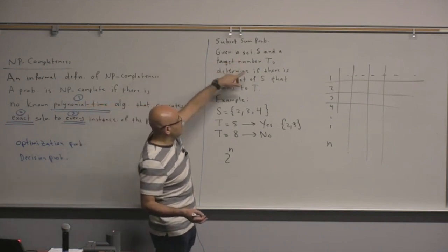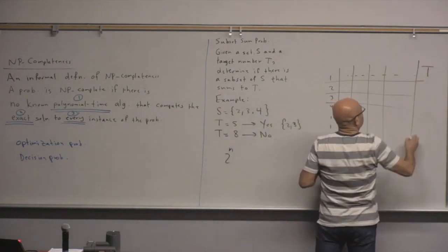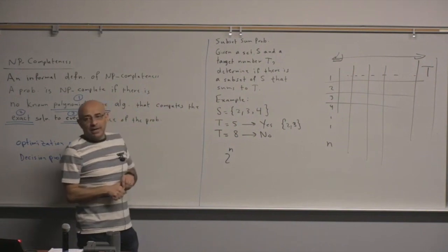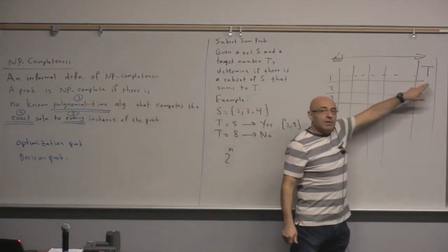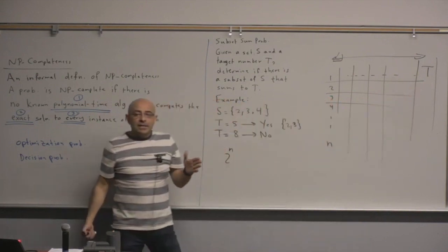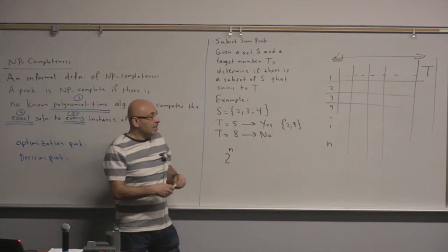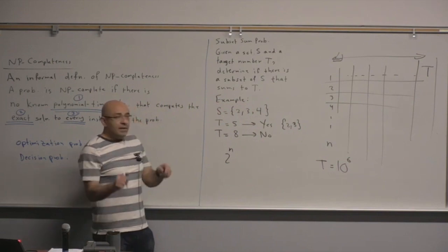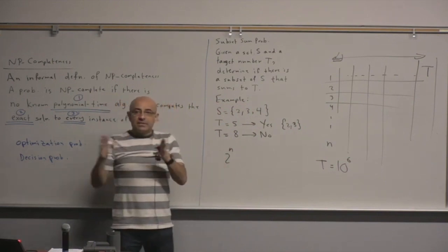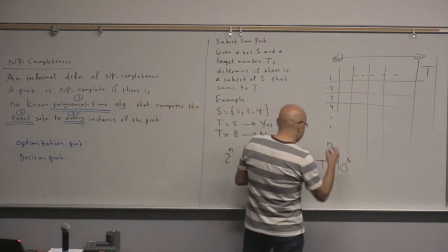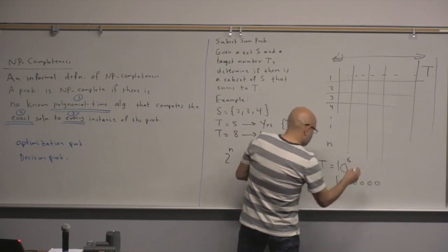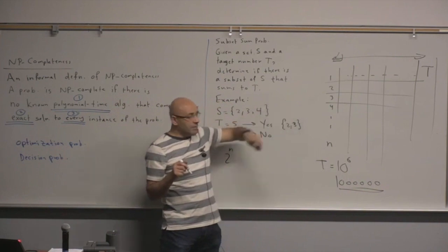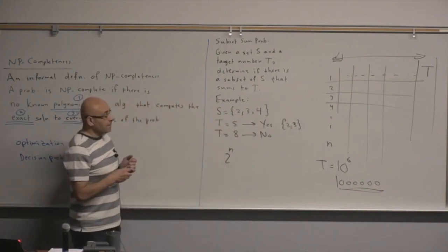The problem is defined by set S with n elements and target T. The number of columns needed equals the target T. This makes it a non-polynomial algorithm because T can be arbitrarily large, and the input size is just an encoding of this number. If T equals 10^6, the input will have only 6 or 7 digits — so the value of the number is an exponential function of the size of the encoding. Therefore, strictly speaking, this is an exponential algorithm.